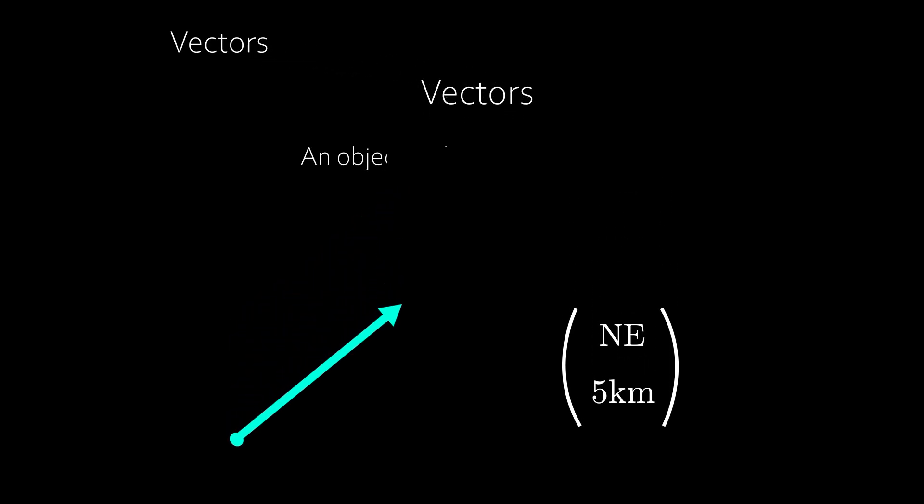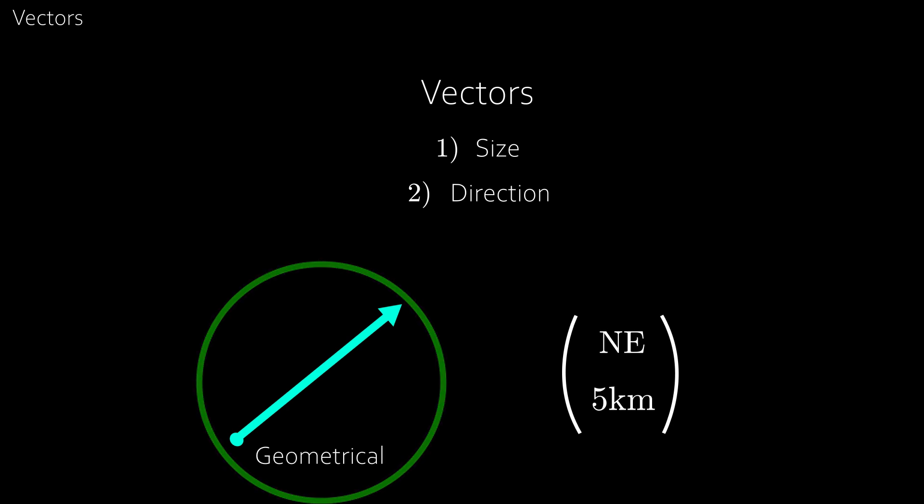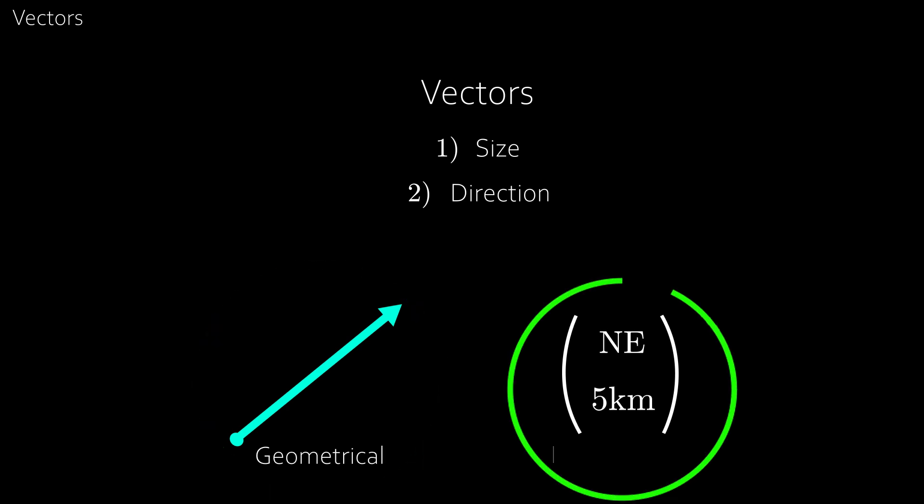A vector is an object with more than one value that describes something. And in mathematics, that something is usually size or magnitude, for example given by the size of the arrow, and direction, such as the direction the arrow is pointing in. There are two ways to represent vectors. One is geometrical, which is just that arrow, and the other is mathematical.